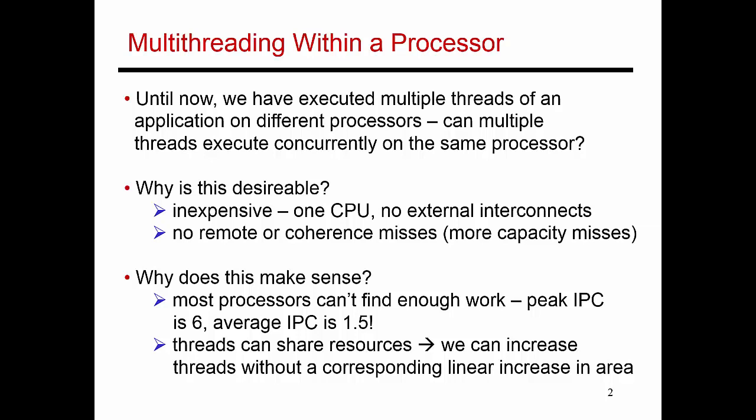So why would I want to do this? If you look at an out-of-order processor, it maybe can support execution of six different instructions in any given cycle. Let's say I have six ALUs and my issue queue can find six instructions to execute in any one given cycle. If I build a processor like that, the peak IPC — instructions per cycle — should be six. But most programs don't have such high levels of parallelism, so the issue queue can only find one or two instructions to execute in any average cycle. In practice, the average IPC is closer to 1.5, meaning all the ALUs are sitting underutilized most of the time.